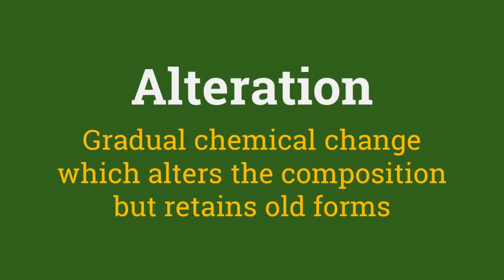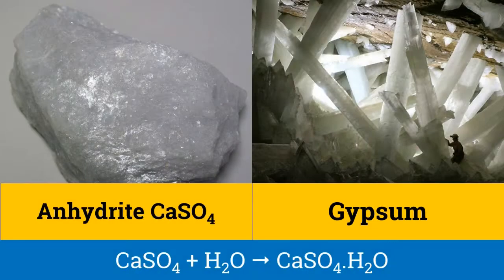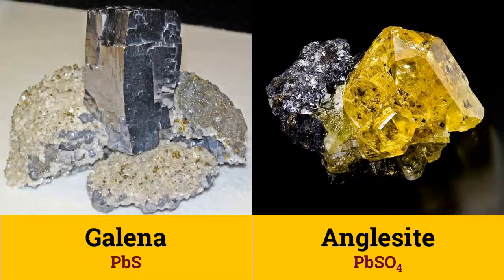Alteration is that type of pseudomorphism where a gradual chemical change alters the composition of a mineral but allows it to retain its old form. Alteration pseudomorphism is shown by anhydrite CaSO4, which gradually changes to gypsum. Galena changing to anglesite is another example. Often in alteration, the core of the original mineral may be found inside the pseudomorph.